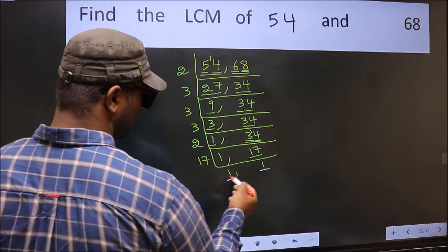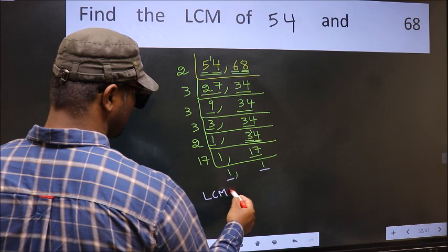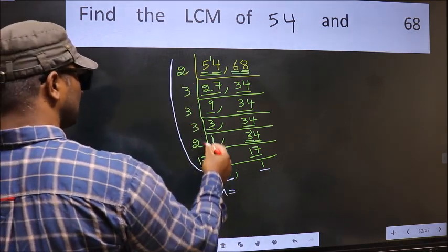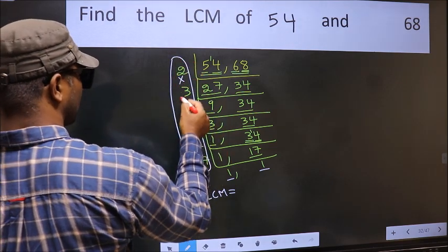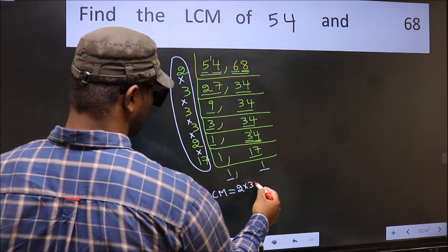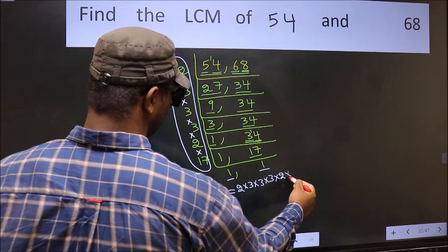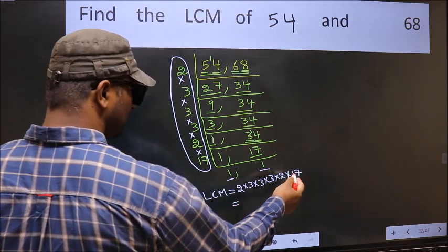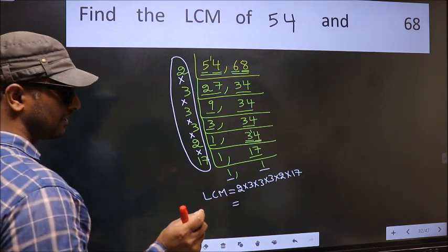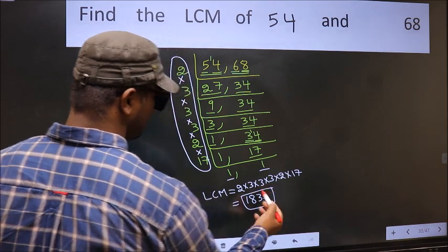So we got 1 in both places. Our LCM is the product of these numbers: 2×3×3×3×3×2×17. When we multiply these numbers, we get 1836. So 1836 is our LCM.